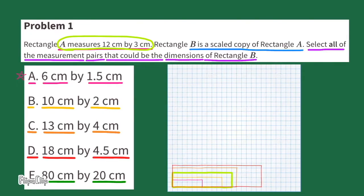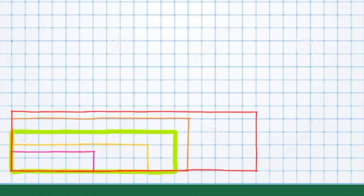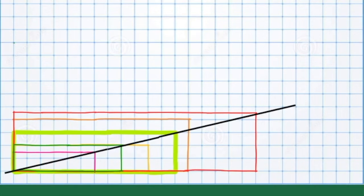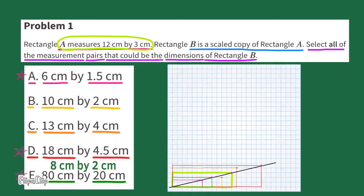This last rectangle is way too large to draw on this graph paper, so I'm going to scale it down myself. 80 divided by 10 is 8, and 20 divided by 10 is 2, so I'm actually going to draw a rectangle that's 10 times smaller than the dimensions listed for Rectangle E. One method you can use to see if a rectangle is a scaled version of another is to run a line through the corners of the original rectangle. If the line runs through the corners and matches, those rectangles are a scaled copy. Looking closely, three of these rectangles line up perfectly with Rectangle A. So examples A, D, and E are all scaled copies of Rectangle A and could be Rectangle B.